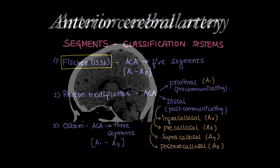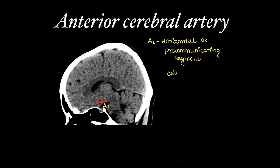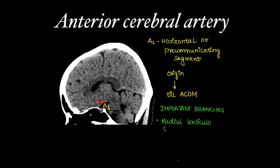Now let's learn about Fisher's classification. The first segment, A1, also called the horizontal or pre-communicating segment, extends from its origin until the anterior communicating artery. Important branches of A1 are the medial lenticulostriate arteries and the anterior communicating artery.